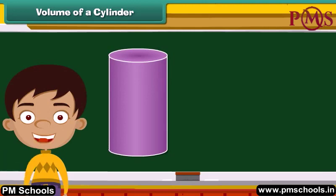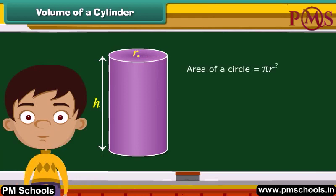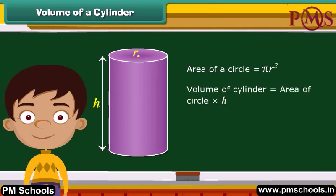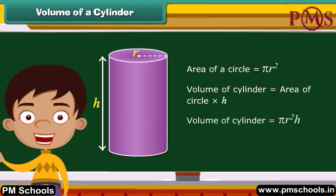A solid that has the shape of an ordinary tin can or a drum is a cylinder. The two bases of a cylinder are circular in shape. We know the area of a circle is equal to pi R squared. For calculating volume, we multiply the area of a circle by the height. So, the volume of a cylinder is equal to pi R squared times H.